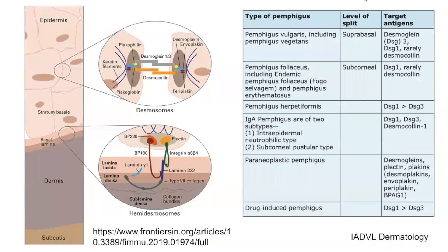In order to understand the molecular nature of Pemphigus vulgaris, let's remind ourselves about the different proteins in the junctions at different levels of the skin. The diagram on the left is a schematic presentation of human skin depicting the targets of auto-antibodies in autoimmune bullous dermatoses. In the top circle, we can see the antigenic structural components of desmosomes, which connect the cytoskeletons of neighboring keratinocytes. These desmosomes are made up of sub-proteins called Desmoglein 1, Desmoglein 3, Desmocollin, Plakoglobin, and Periplakin.